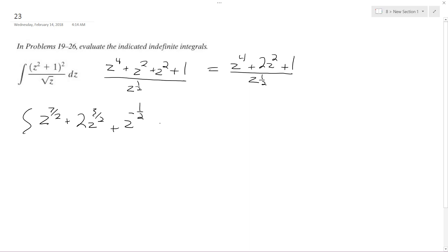All right, so dz this whole thing, integrate this whole thing. So what I end up with is z raised to the seven halves plus one over seven halves plus one plus two. And then z raised to the three halves plus one over three halves plus one plus z raised to the negative one half plus one over negative one half plus one.